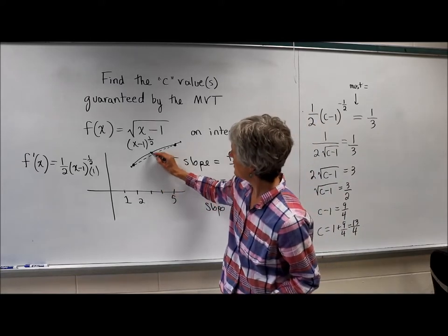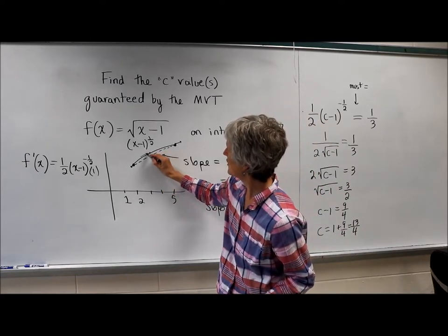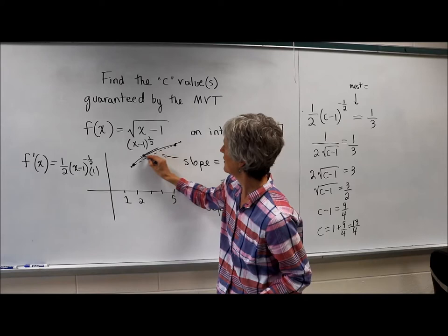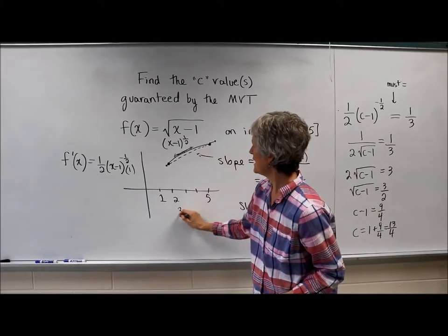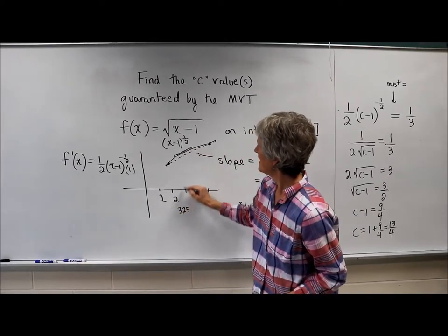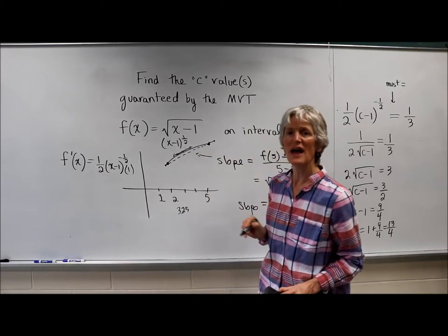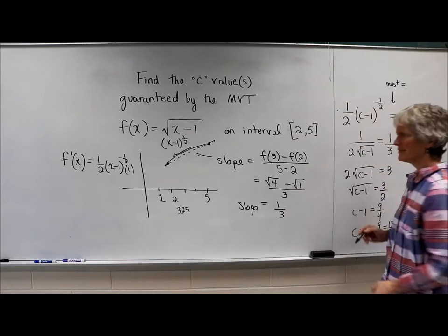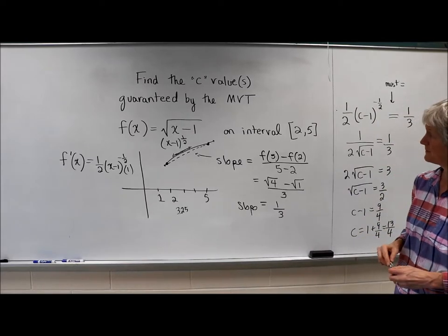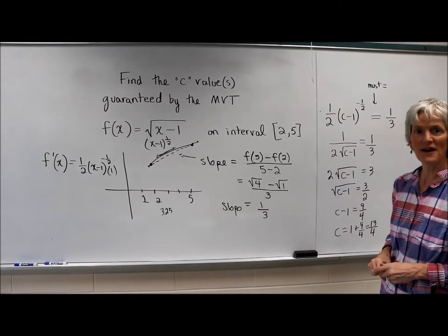So right around there. Of course, my graph is not very accurate, but that seems pretty good. At 3.25, this derivative is going to be exactly equal to that average slope. That makes sense. Absolutely.